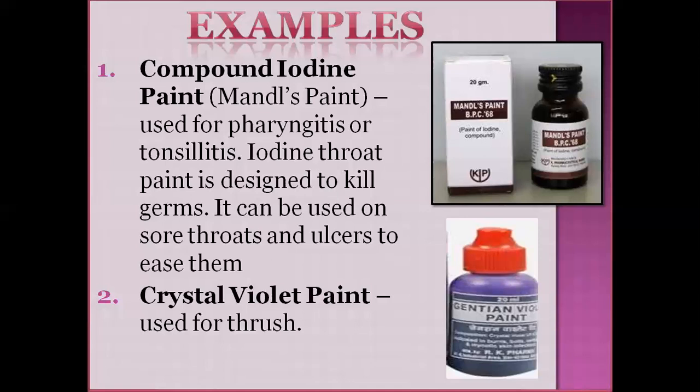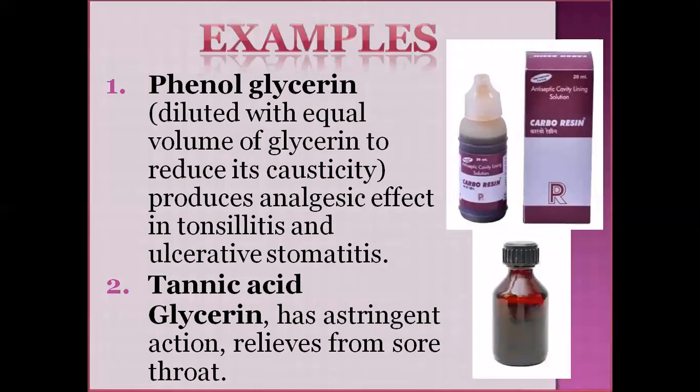If the patient is having the problem of health, if there is an ulcer, then in this condition compound iodine paint will be easier to heal. Then crystal violet will be used for thrush. Then phenol glycerin — it is diluted with equal volume of glycerin to reduce its causticity. It will be diluted with equal amount of glycerin which will reduce its causticity, then it will produce phenol glycerin, then the pain will reduce.